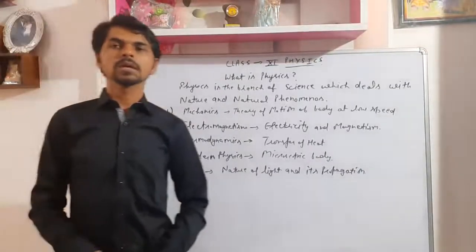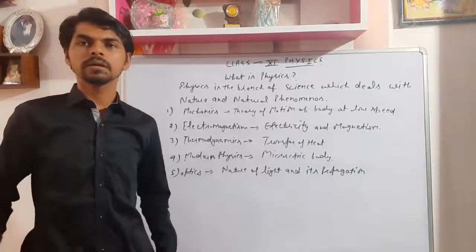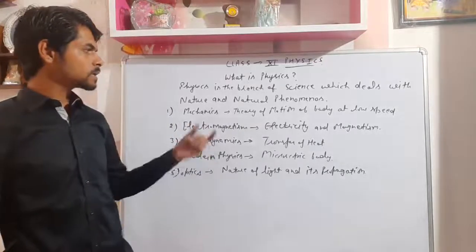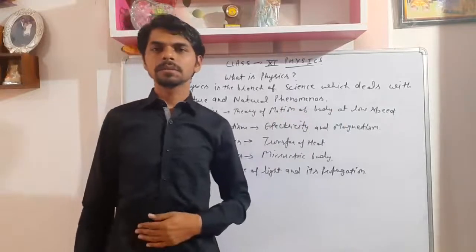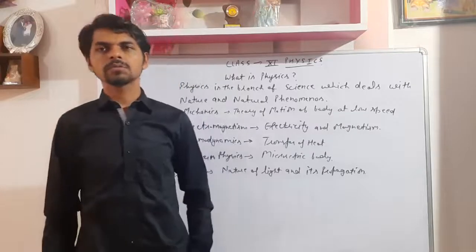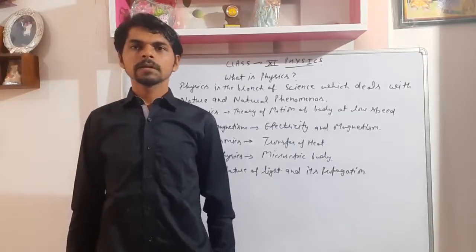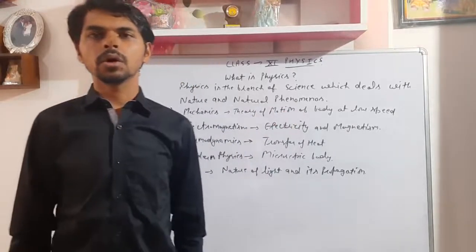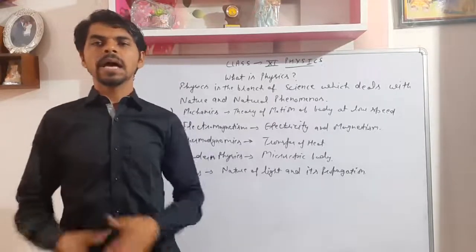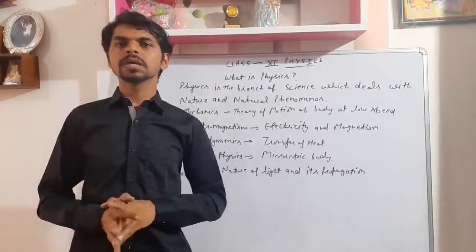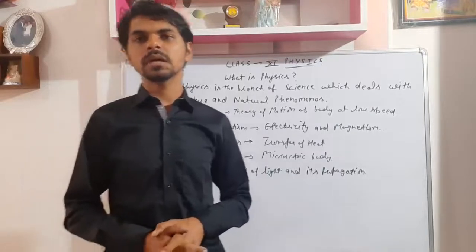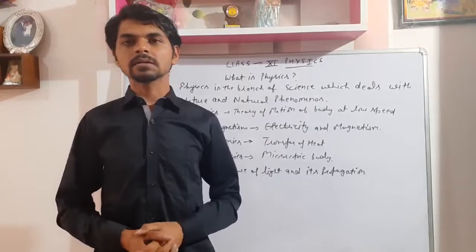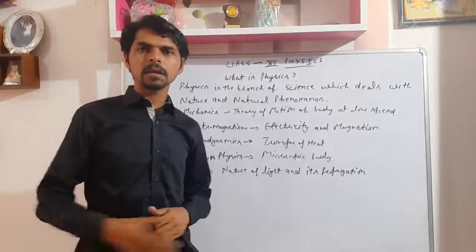There are five branches to be studied. The first one is mechanics. Mechanics deals with the motion of the body at low speed. Some objects around us are moving at very high speed and some at very low speed. The objects which are moving at very low speed are covered under the study of mechanics. Mechanics also has further branches — dynamics, statics, and kinematics — which we will study in the coming sessions.